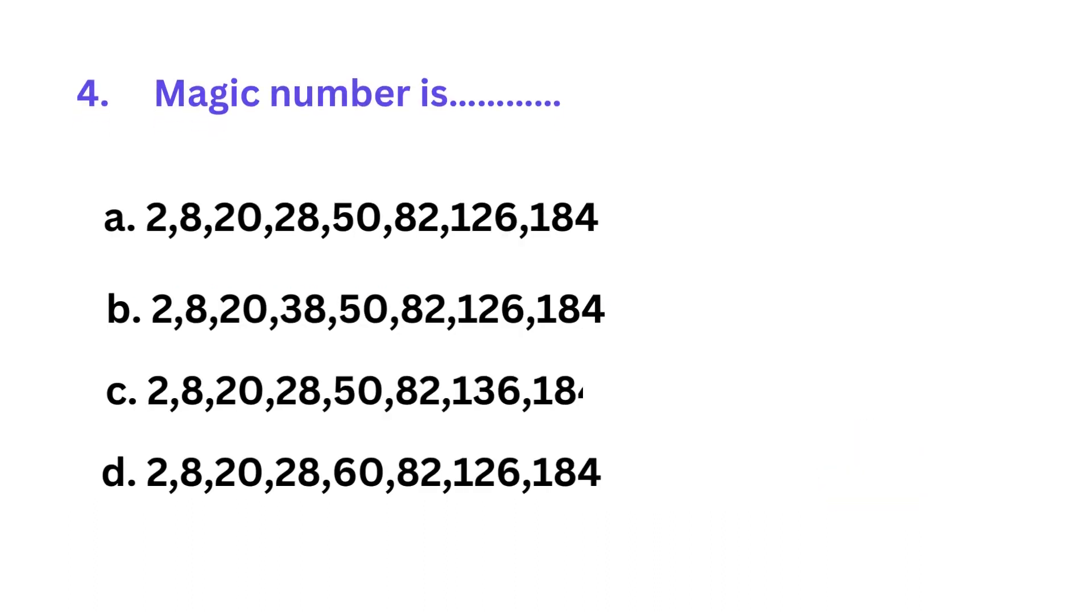So magic number is A. 2, 8, 20, 28, 50, 82, 126, 184, B. 2, 8, 20, 38, 50, 82, 126, 184, C. 2, 8, 20, 28, 50 up to 184, D. 2, 2, 184